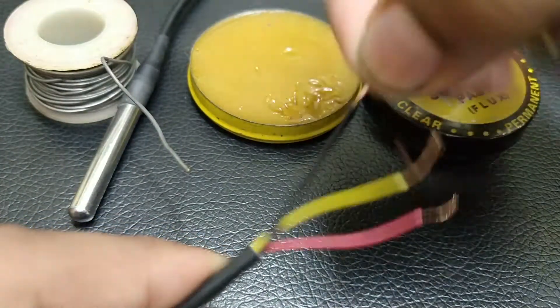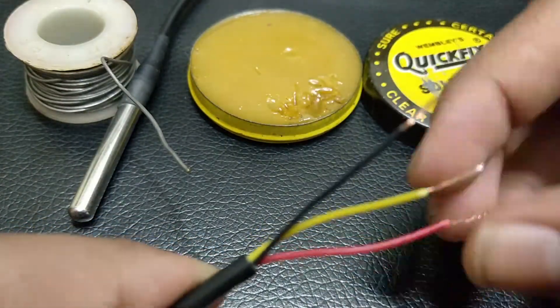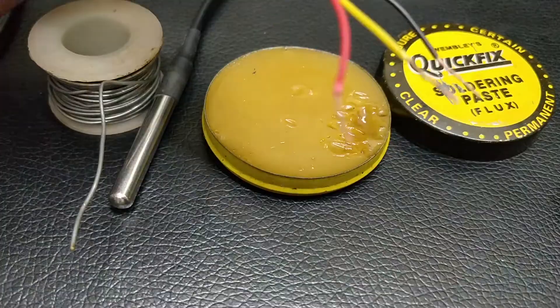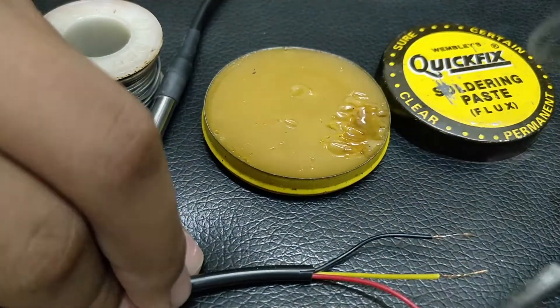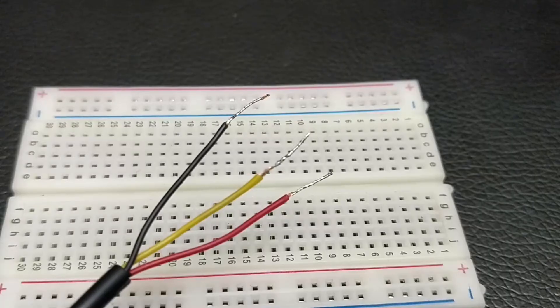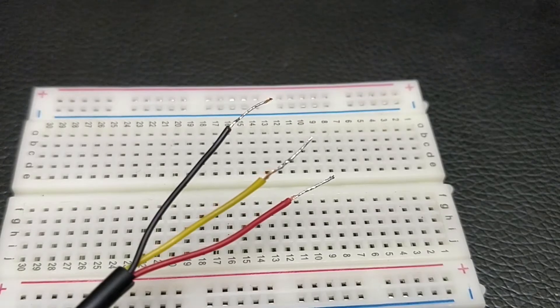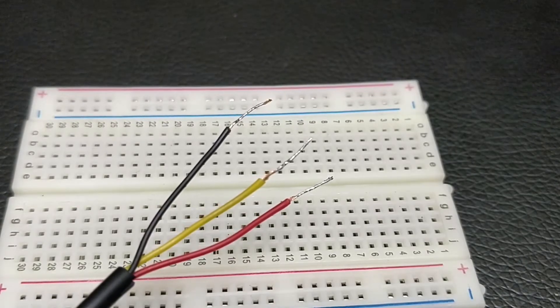Another point is we need to tin the stranded wire of the sensor with a little bit of solder. This will keep the ends sticking together. Now the sensor wires should fit into our breadboard with no problem.